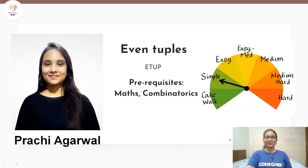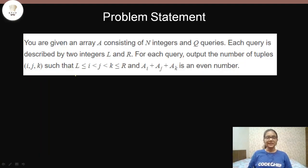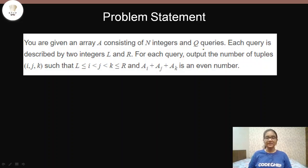Today we'll be solving the problem Even Tuples, which is a simple problem and it belongs to the July Starters. Now let us go to the problem statement. In this problem we are given an array which consists of n integers. Now what we have to find out is the number of tuples such that ai plus aj plus ak is an even number. But we don't have to do this for the entire array — instead we'll be given queries.